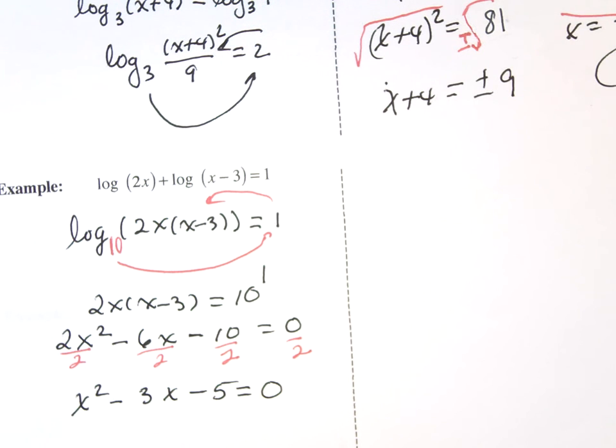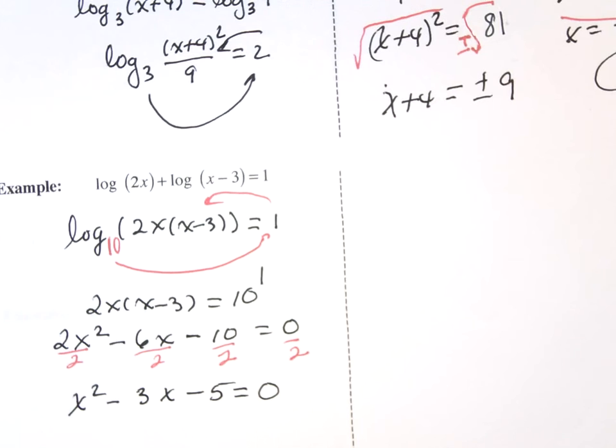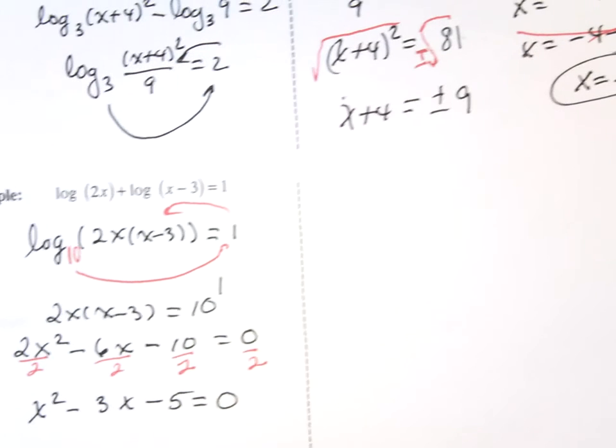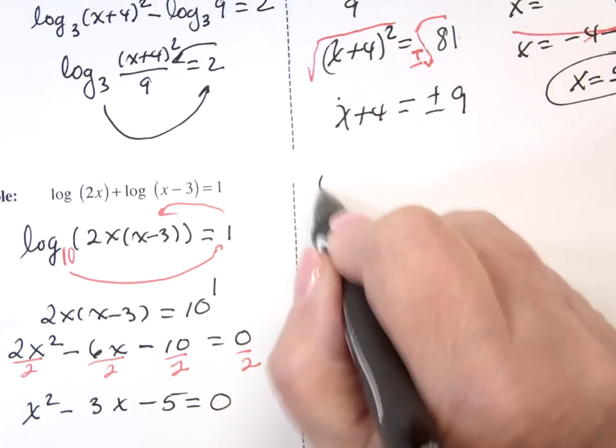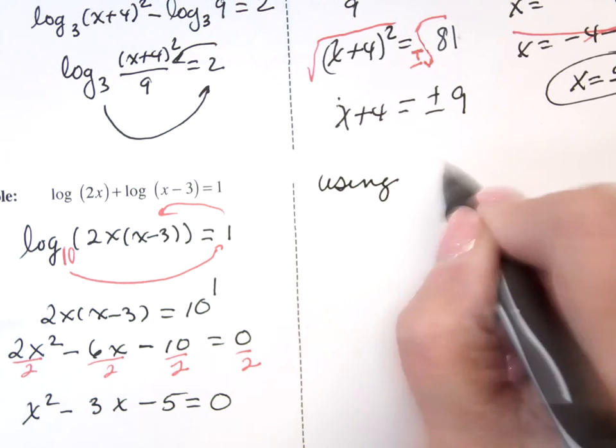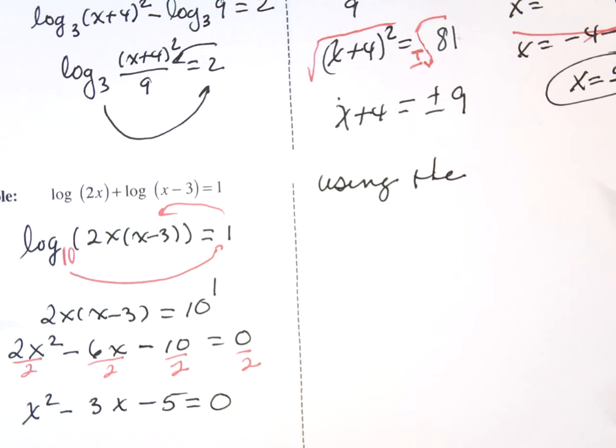Does it factor? Does it factor? 5 is 5 and 1. How do you get a 3 from a 5 and a 1? You don't, right? So it doesn't factor. So what am I going to have to use? That quadratic formula. Using the quadratic formula.